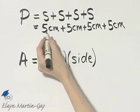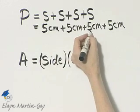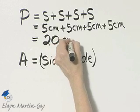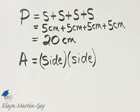And let's find that sum. 5 plus 5 is 10, plus 5 is 15, plus 5 is 20. So that's 20 centimeters, and that is the distance around the square.